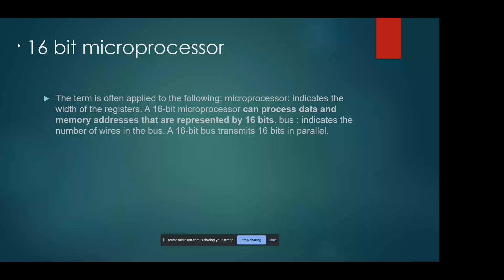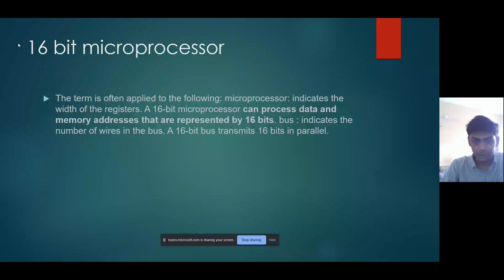We will start the presentation about advanced microprocessors. A 16-bit microprocessor — the term is often applied to indicate the width of the registers. A 16-bit microprocessor can process data and memory addresses represented by a 16-bit bus, indicating the number of wires in the bus. A 16-bit bus transmits 16 bits in parallel.